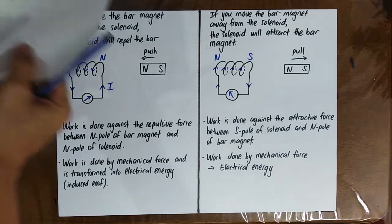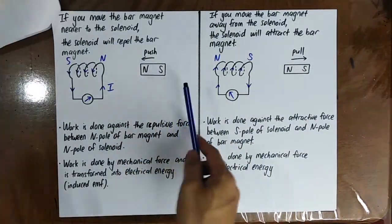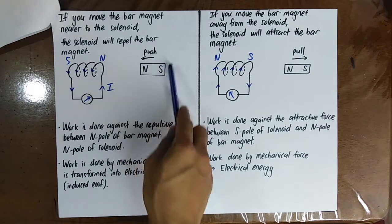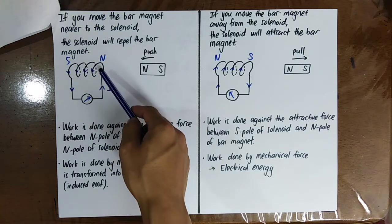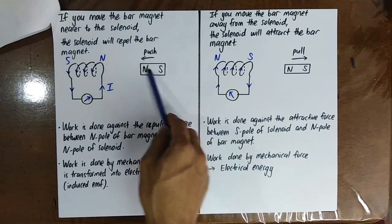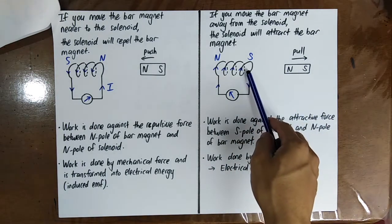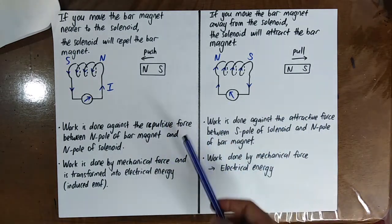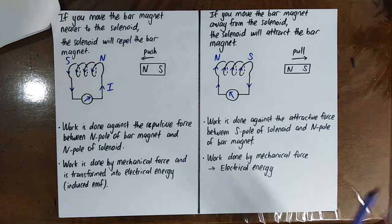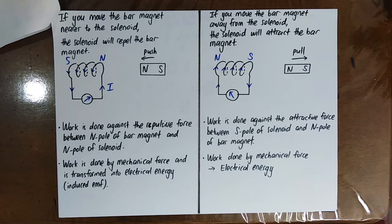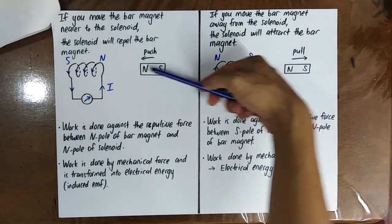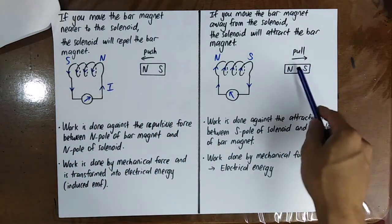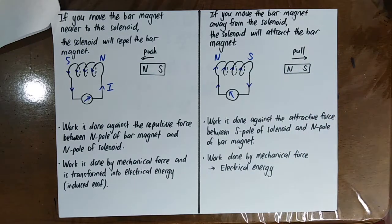To remember Lenz's law easily: when the bar magnet approaches the solenoid, the solenoid repels it; when the bar magnet moves away, the solenoid attracts it. It's like being at home — when you want to leave, you feel homesick and want to return. When something approaches, it's opposed; when it leaves, it's also opposed. That is Lenz's law.